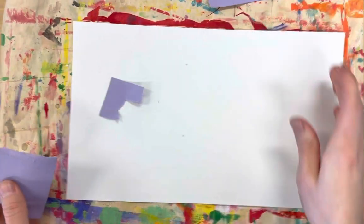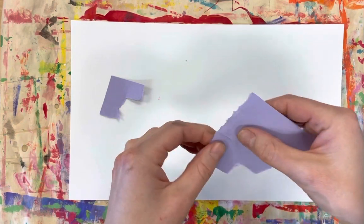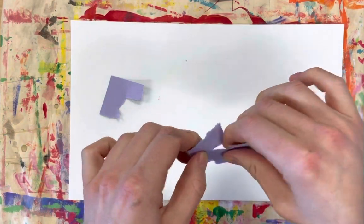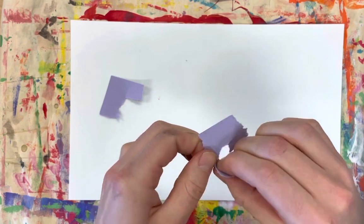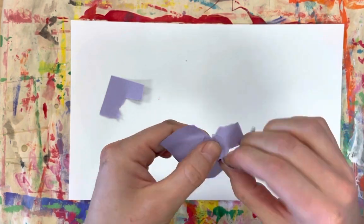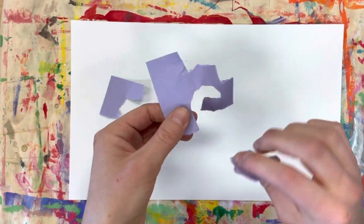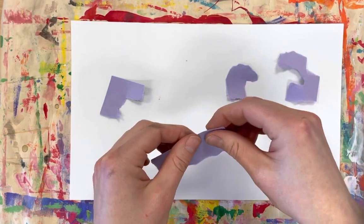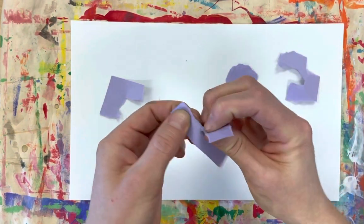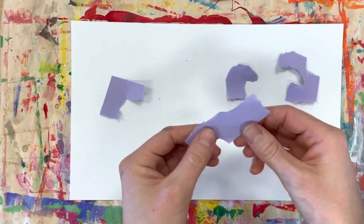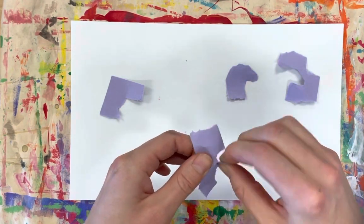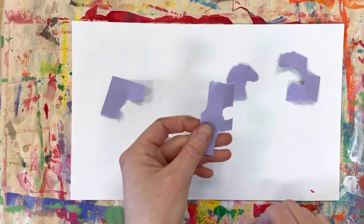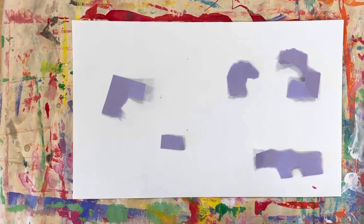Maybe I can start just by ripping some smaller pieces. I can tear curved edges or straight edges depending on how I'm holding my paper. I can make small pieces and large pieces. That one kind of looks like a letter F.